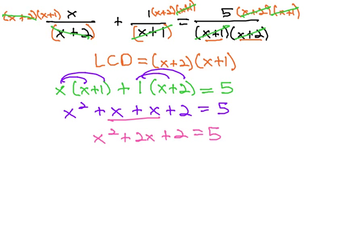When solving an equation with x squared, we need it to equal 0 first, and then factor the resulting equation. To make it equal 0, we'll subtract 5 from both sides, giving us x squared plus 2x minus 3 equals 0.